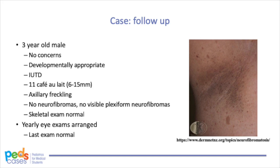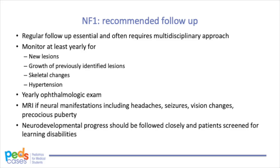His parents were already counselled on what NF1 is when he initially presented over two years ago, but as it was not clinically confirmed then, you now have a teaching session with them. Children with NF1 need to be closely followed for further manifestations, as NF1 tends to progress throughout childhood and adolescence. Children need to be frequently reassessed — at least yearly — for new skin lesions, growth of previously identified lesions, skeletal changes, and hypertension.